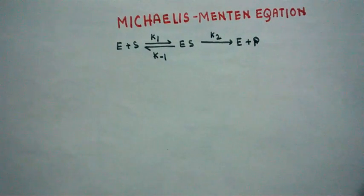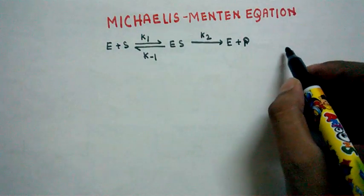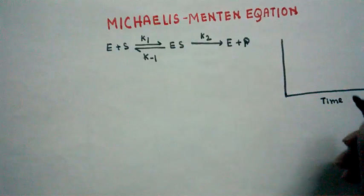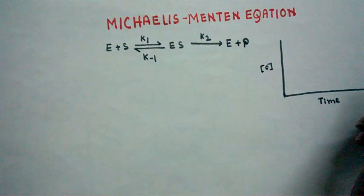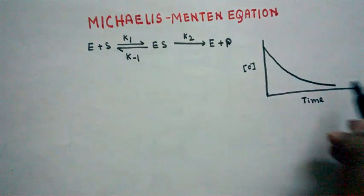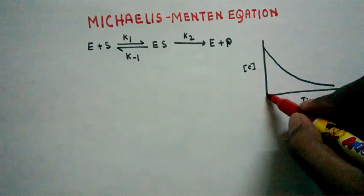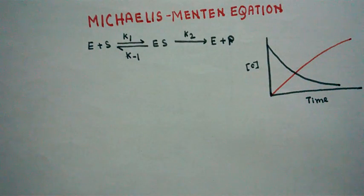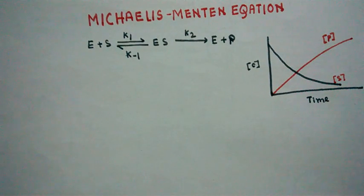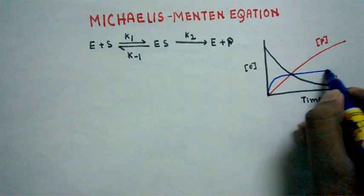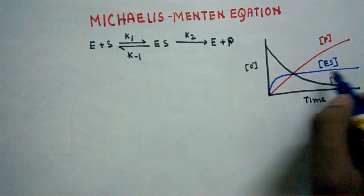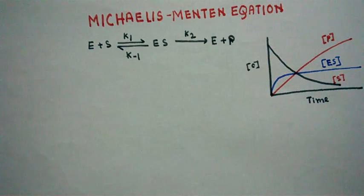Now we have to make an assumption called the steady-state assumption. If we draw a graph with time on the x-axis and concentration on the y-axis, with increasing time the substrate concentration gradually decreases, the product concentration increases, and the concentration of the enzyme-substrate complex (ES complex) first increases and then reaches a steady state or plateau.